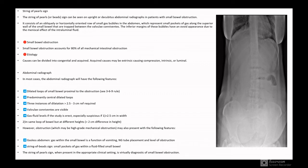Small bowel obstruction accounts for 80 percent of all mechanical intestinal obstruction. It can be congenital or acquired. Acquired may be due to extrinsic causes like compression, intrinsic, or luminal.